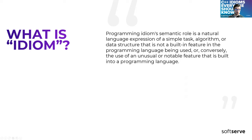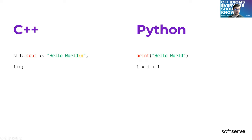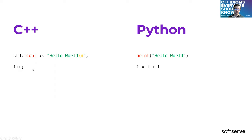For example, in C++, to output some text to the console, you can use std::cout. But for a Python developer, it makes no sense, as well as incrementing integers using i++. So these two are the simplest C++ idioms.